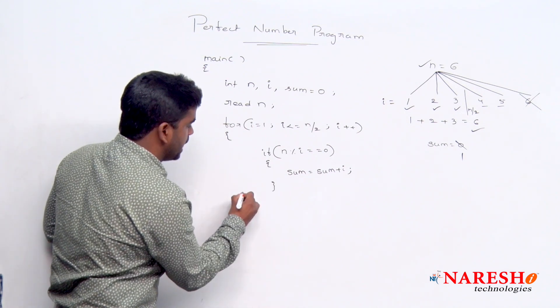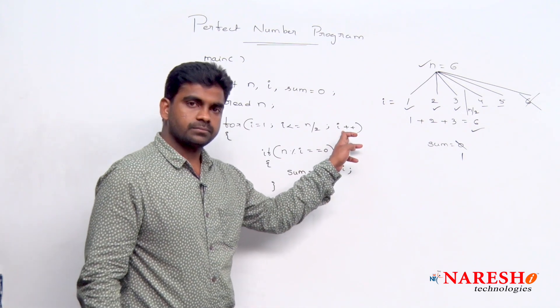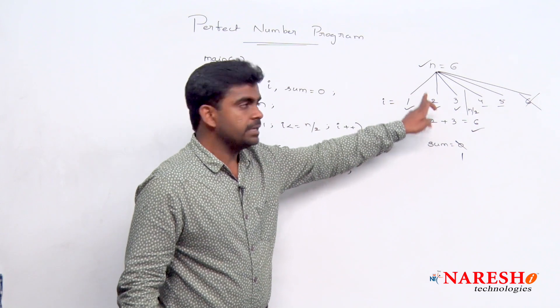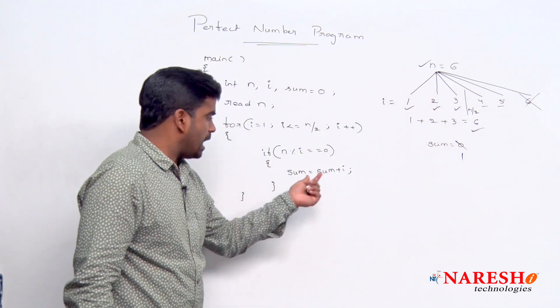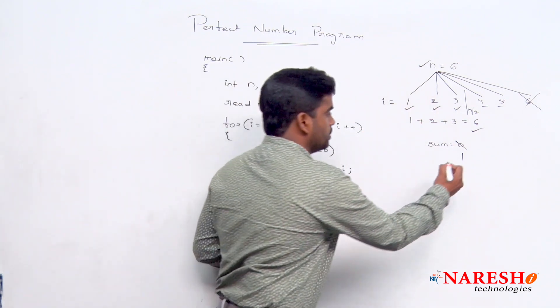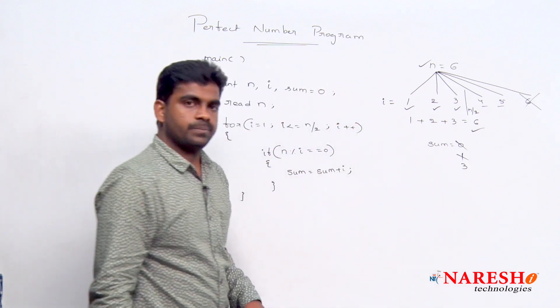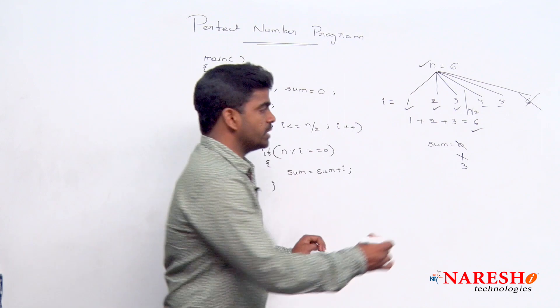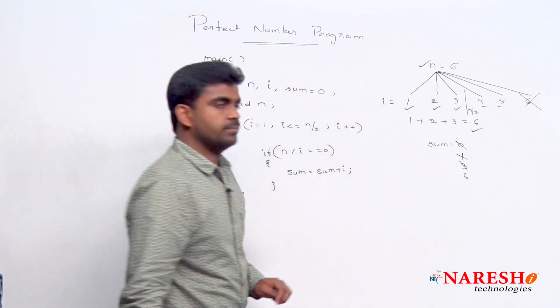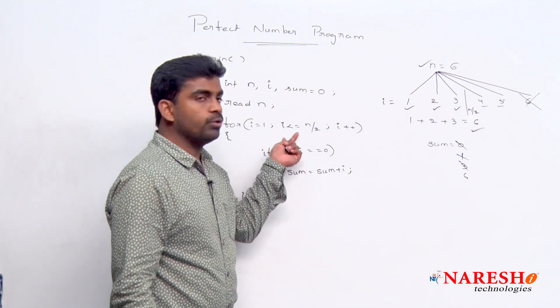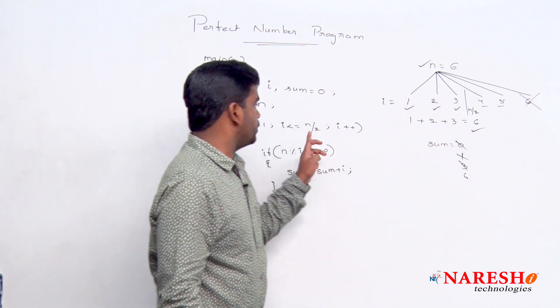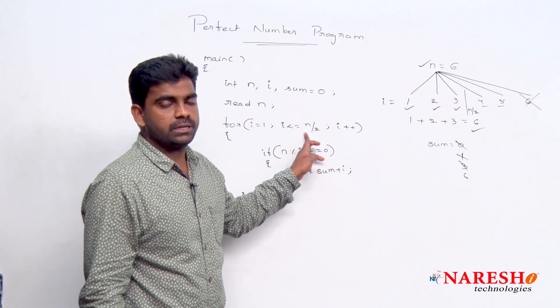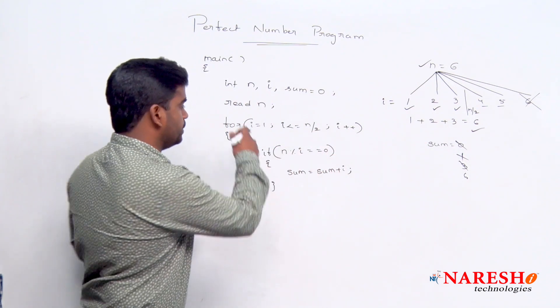And next one, here i value will increase automatically. i value becomes 2. Yes, 2 is a factor, that we are adding to sum. So here 1 plus 2 value is 3. And next i value 3, yes, 3 is divisible by 6. So here 3 plus 3 is 6. And next, whenever i value 4, so 4 is less than or equal to 3, n by 2 value is 3, condition false, it will terminate.